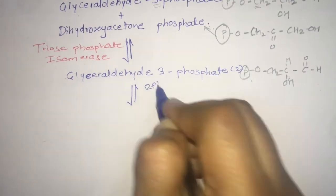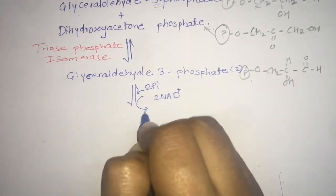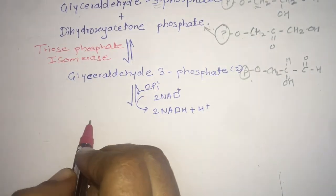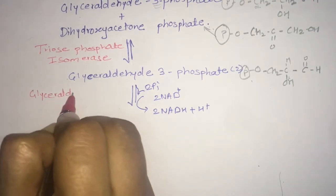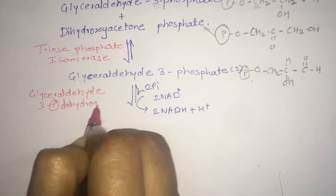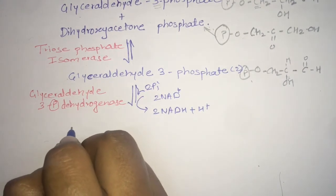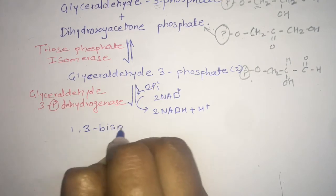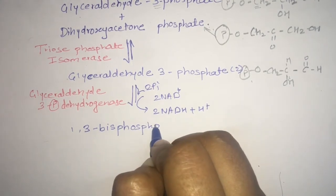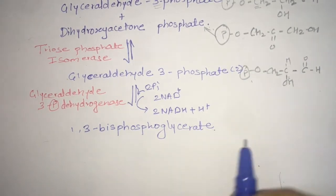Now, for glyceraldehyde-3-phosphate, there is addition of two inorganic phosphate (Pi) molecules — two Pi because there are two molecules of G3P, so one phosphate gets attached to each. This reaction takes place with the help of glyceraldehyde-3-phosphate dehydrogenase. The dehydrogenase takes out hydrogen from the reaction, converting NAD⁺ to NADH+H⁺. The result is 1,3-bisphosphoglycerate.